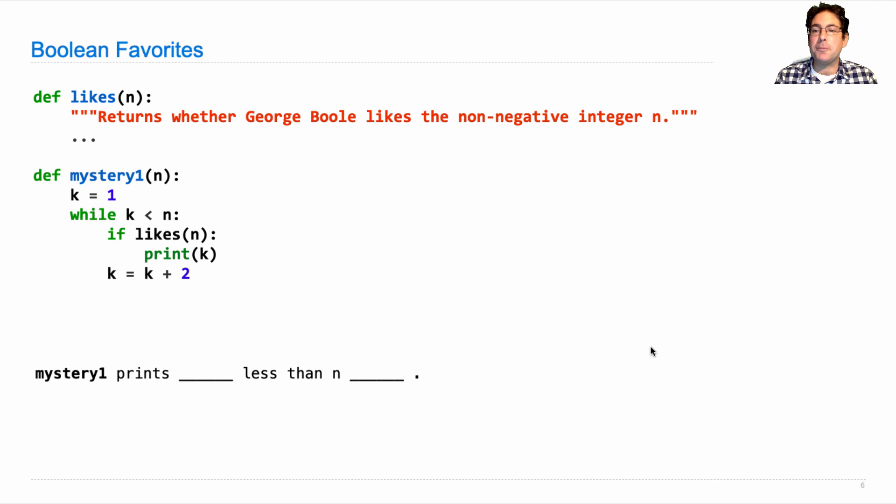Oftentimes the descriptions will have some kind of template like mystery one prints something less than n something, and maybe will give you some multiple choice alternatives or maybe you'll have to fill it in. One approach to this kind of problem is to read the code, then read the description options so that you know what you're choosing amongst, and then focus on an example in order to figure out what the right answer is.